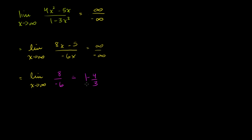Negative 4 over 3. So this limit exists. This was an indeterminate form, and the limit of this function's derivative over this function's derivative exists. So this limit must also equal negative 4 over 3, and by that same argument, that original limit also must be equal to negative 4 over 3.